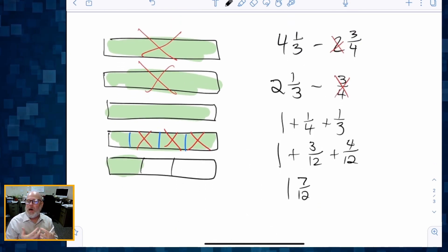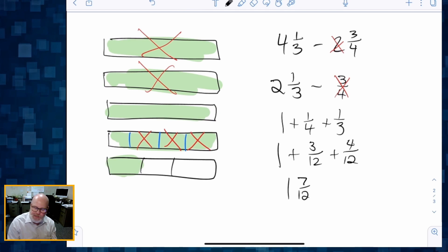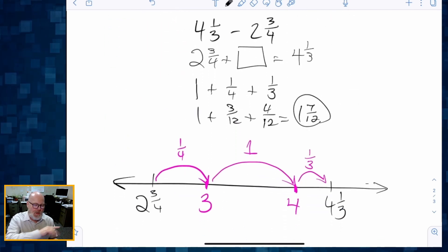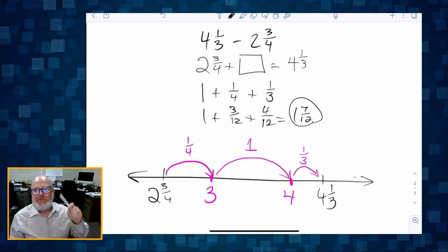We've got kind of like an area model where we're removing from tapes. And then the second one, we have a line model where we're really thinking about what do you have to add to the small number to get to the bigger number. And that wraps up subtracting fractions that would require borrowing, but we're not going to borrow. We're going to do something that makes sense instead.